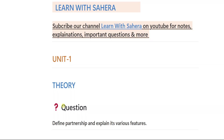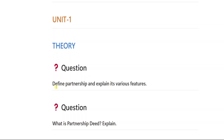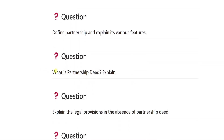In unit number one, you may expect a theory and a problematic question. Definitely one question will be theory and the other will be problematic. From theory, the first important question is: define partnership and explain its various features. What is partnership and its characteristics or elements and features are the same, so whatever they ask, you have to write the same thing. Second is: what is partnership deed? Explain the contents of partnership deed — what is meant by partnership deed and why it is useful.